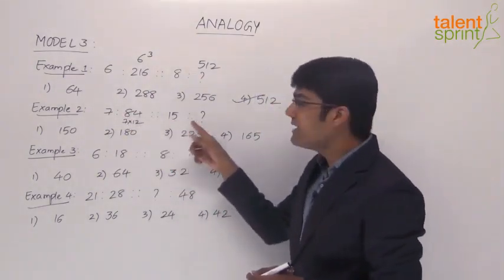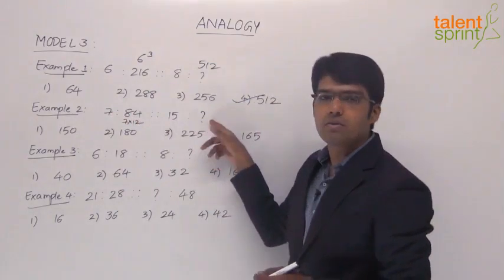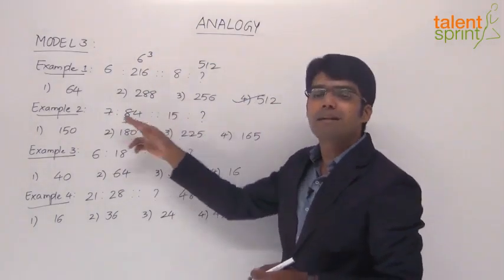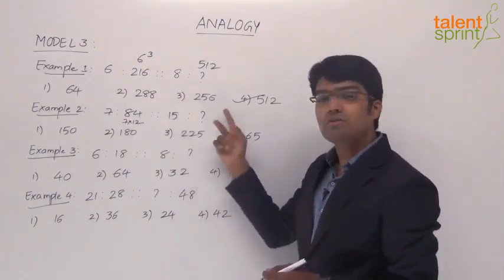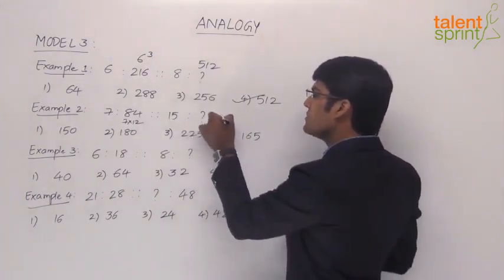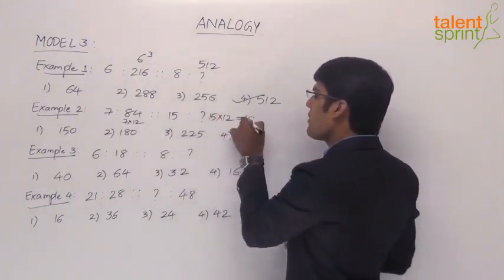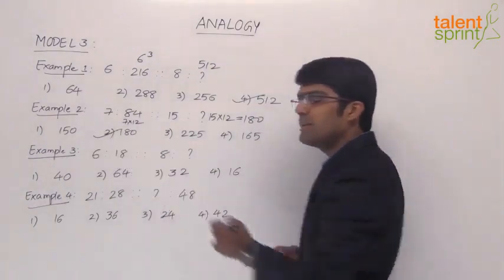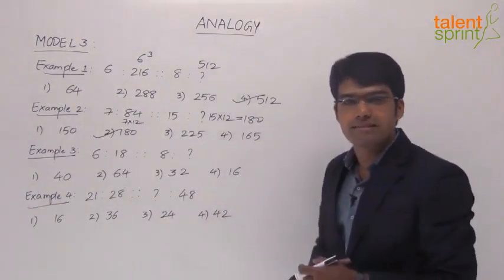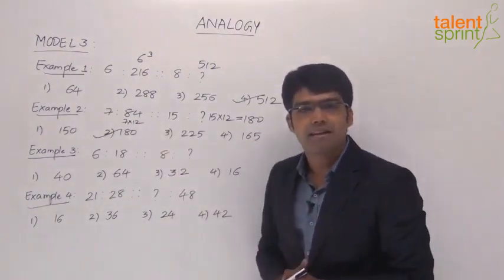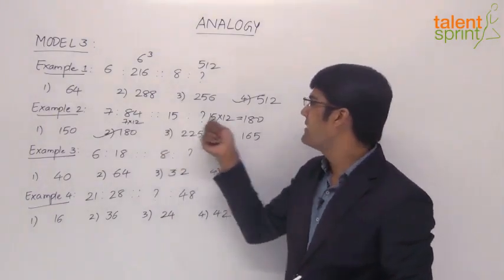So this is 15. The answer here should be 15 into 12 because we are taking the 12th multiple of the given number. So 15 into 12 should be the answer. What is 15 into 12? 15 into 12 is 180. So the answer here has to be second option. Just take the multiples accordingly. So 7 is to 84, then 15 is to 180.